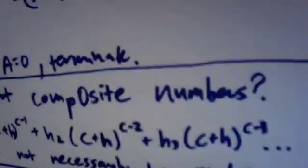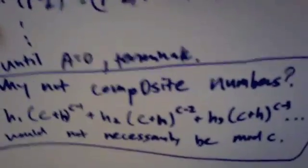Why doesn't this work for composite numbers? For a composite number c, the middle terms in Pascal's triangle are not necessarily multiples of c. They're multiples of some prime factor of the composite, but we can't guarantee they're all 0 mod c. So Fermat's Little Theorem does not necessarily work for composite numbers — there are some cases where it might hold, but it doesn't work for all a relatively prime to that composite number.